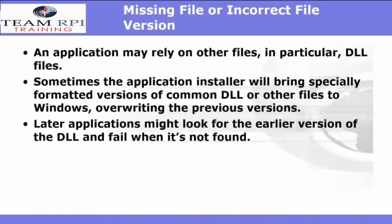It's important to remember that applications may rely on other files, in particular DLL files. Sometimes the application installer will bring specially formatted versions of a common DLL or other files to Windows, overriding the previous versions. However, later applications might look for the earlier version of that DLL and then fail if it's not found. The usual fix for this issue is to perform an internet search for the missing DLL.